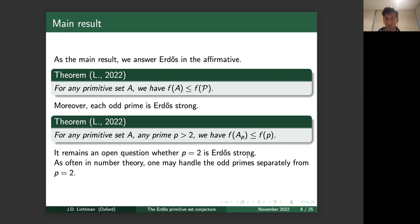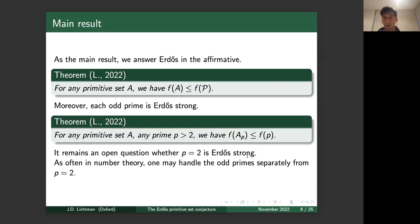These proof techniques break down for the first prime p=2, and it remains an open question whether p=2 is Erdős-strong — specifically, whether there exists a primitive set of even numbers whose f(A) exceeds 1/(2 log 2). As often happens in number theory, one can sometimes handle odd primes separately from the prime p=2, and this is certainly one of those cases — some even call p=2 the oddest prime of them all.